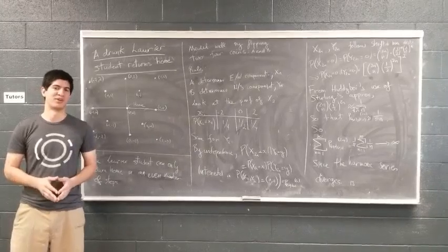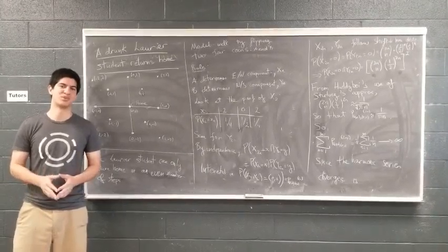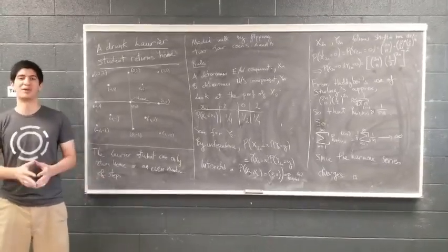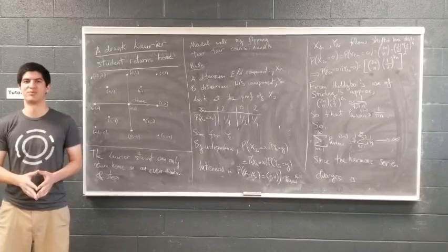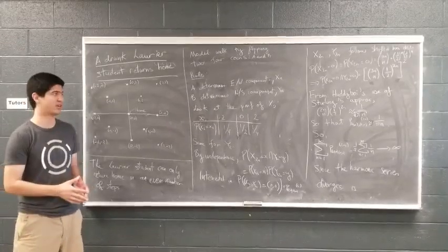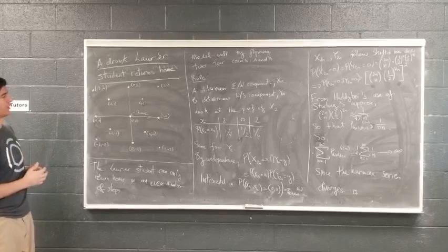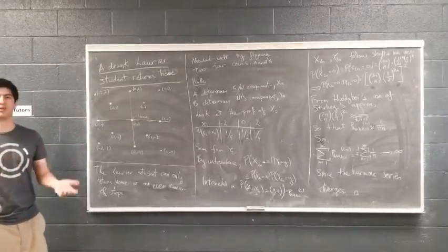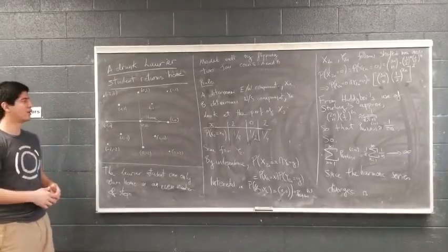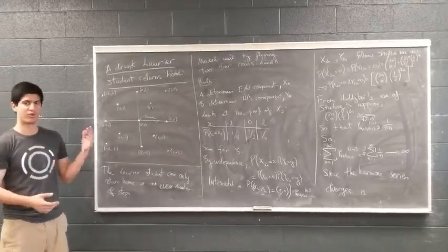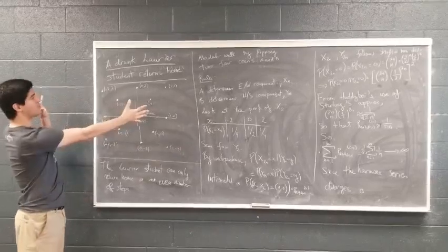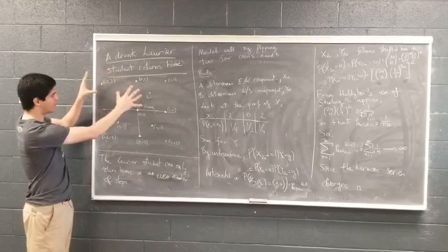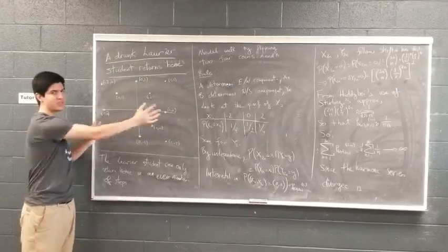In the quest of showing that a drunk Laurier student will return home with probability 1, we model a Laurier student by a drunk particle with probability a half of going in each direction. The particle can walk in this lattice. After every turn, it has probability 50% of going east or west and probability 50% of going north or south. The possible points that the drunk Laurier student can attain are shown in this lattice, which are the coordinates whose sum is an even number.